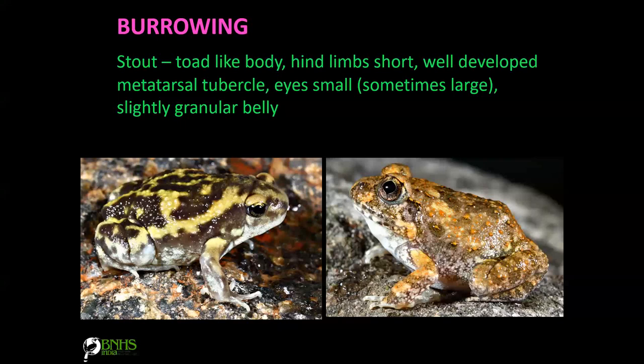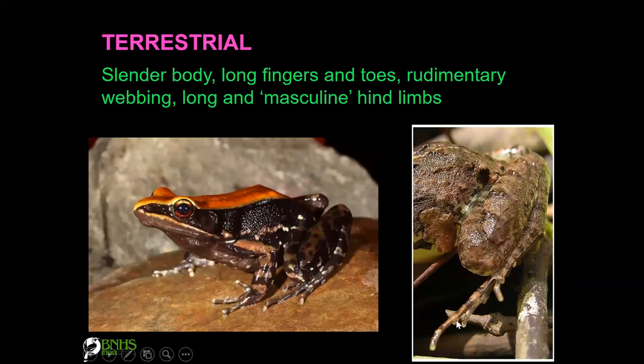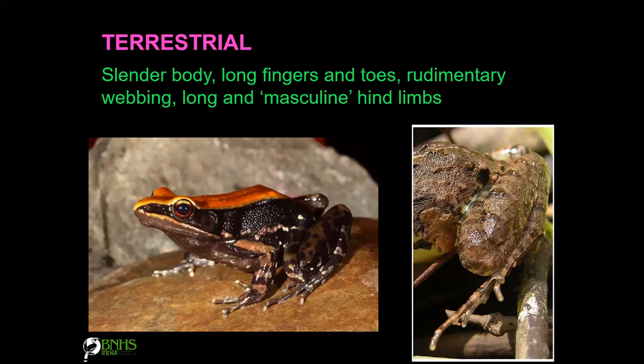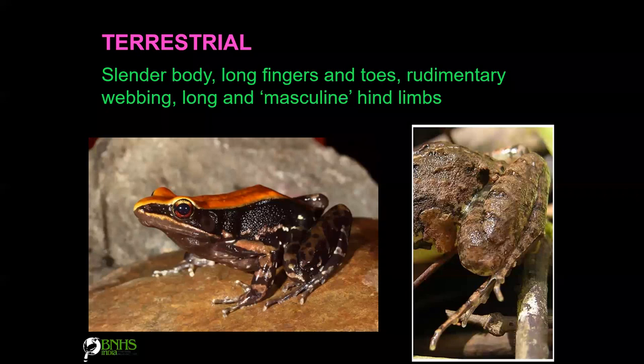Terrestrial frogs have hind limbs with very little webbing, and even the forelimbs lack much webbing. They don't have adhesive discs because they don't need to stick to surfaces — they are free-roaming animals in grasslands, along stream edges, and on forest floors. They have robust hind limbs so they can take long jumps.